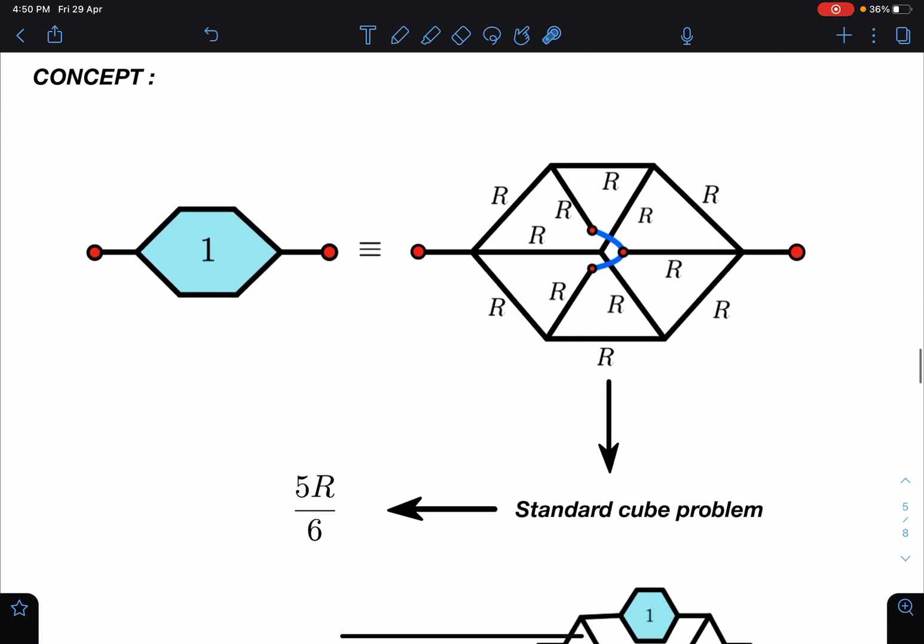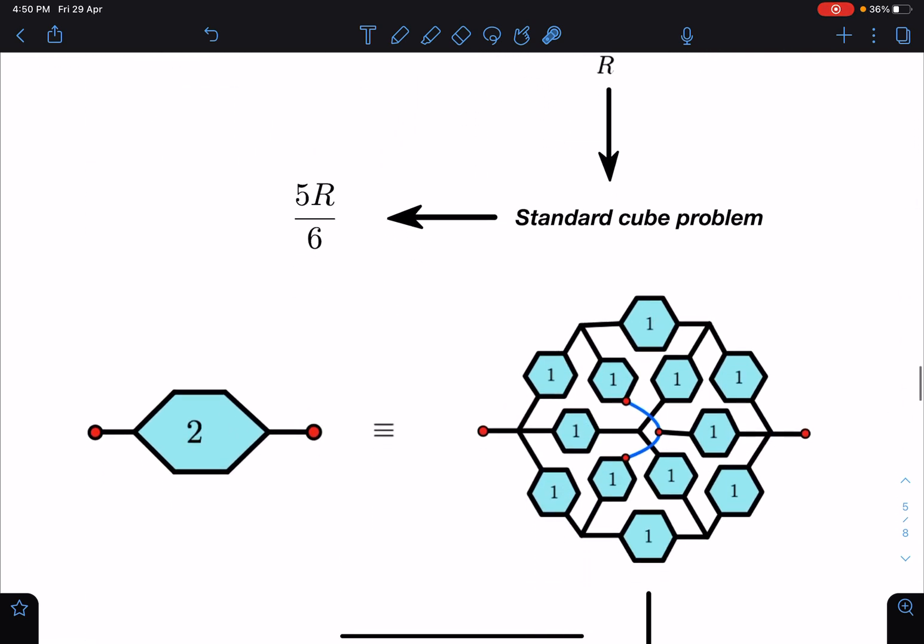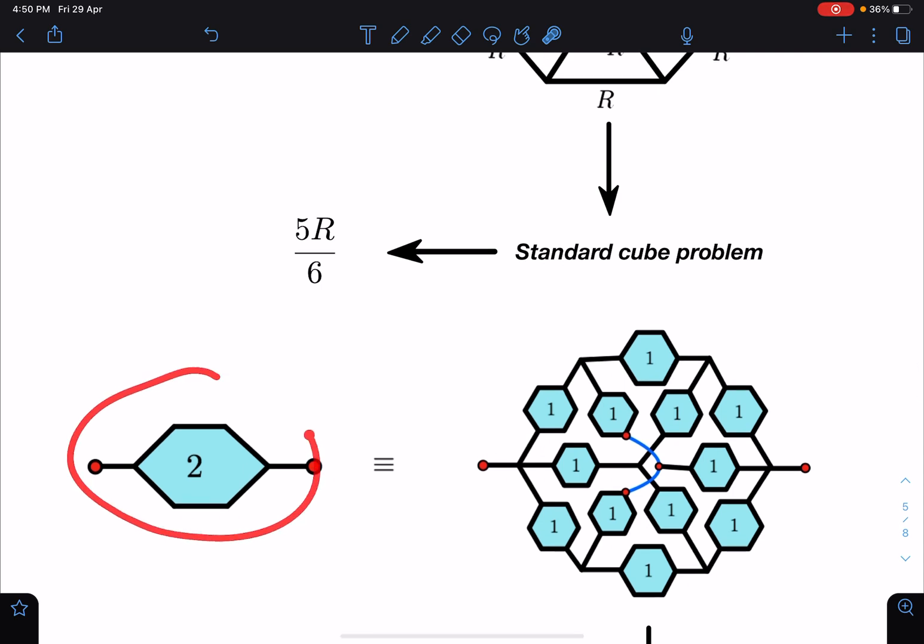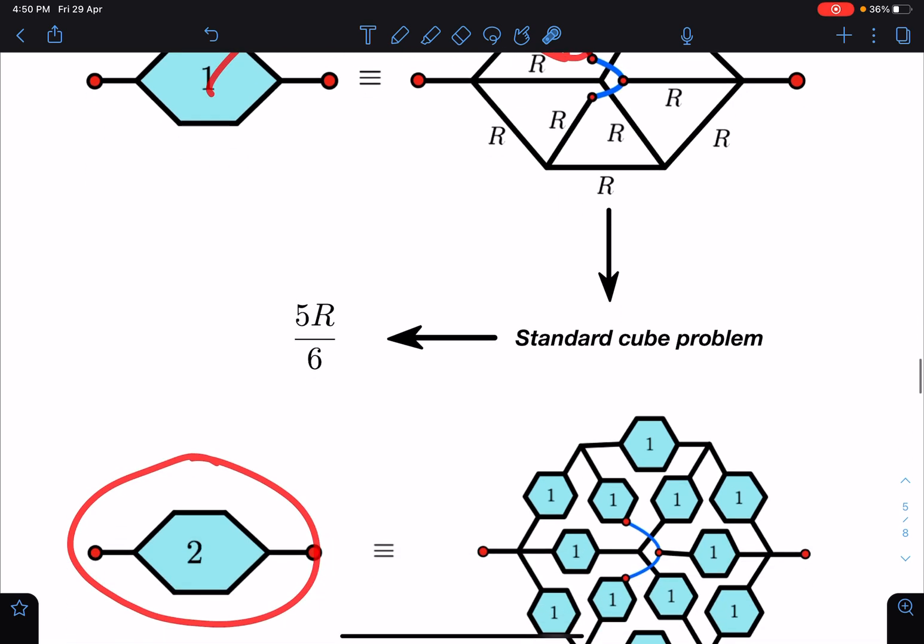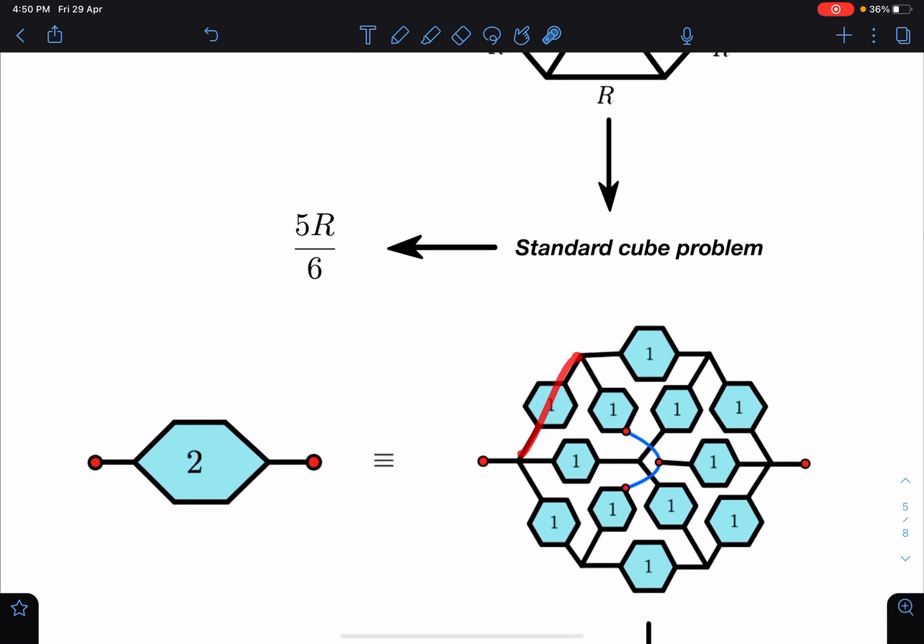Then the next part - grid 2 I am defining where each resistance of this unit will be replaced by this one. So it will look like this and you can see here even this is a cube, even this is a cube problem only. I hope it is visible to you - you can see that it looks like hexagon but actually it is a cube. These are 3D structures.